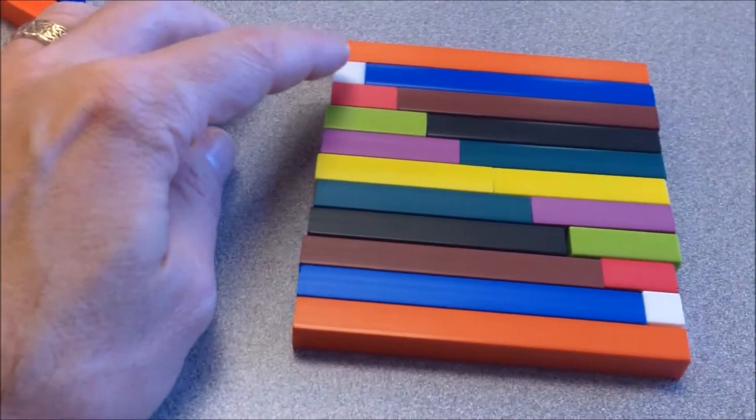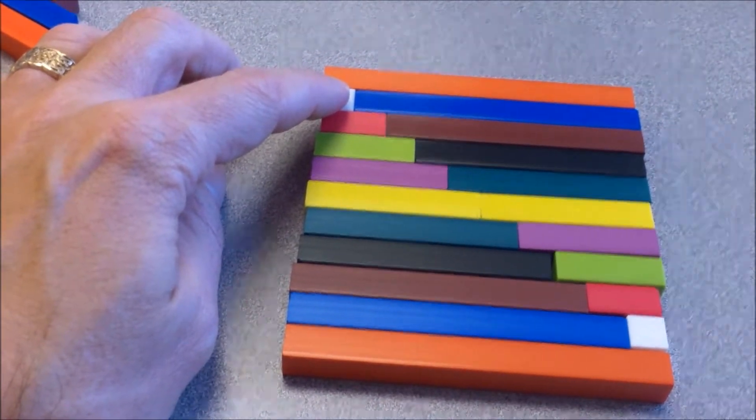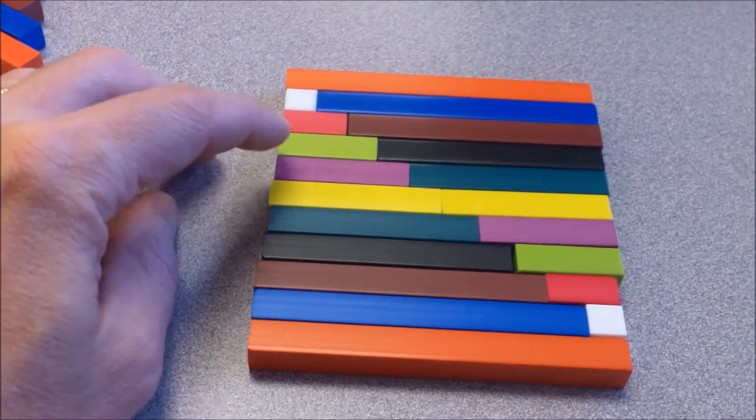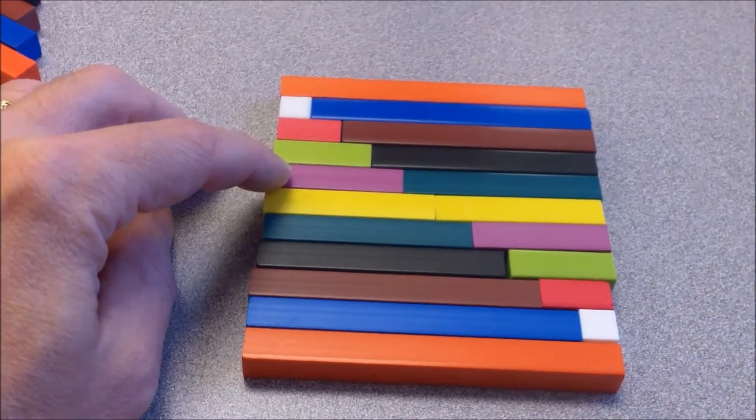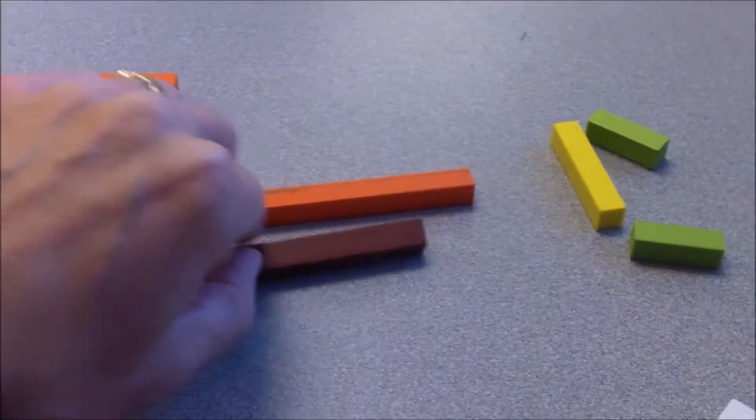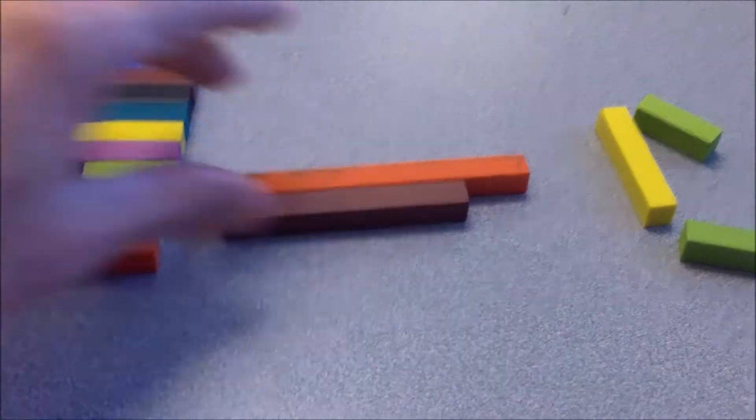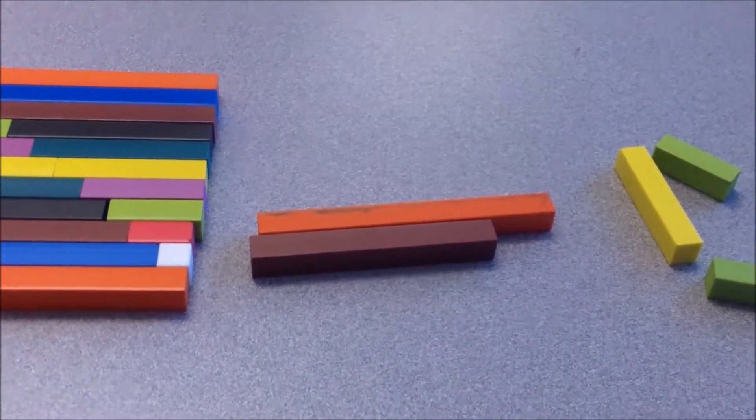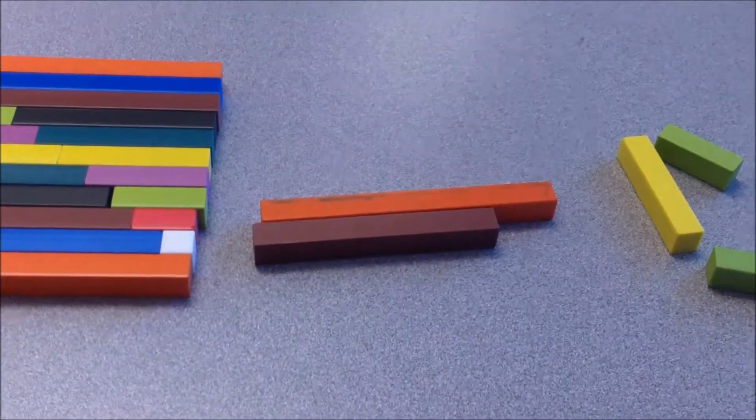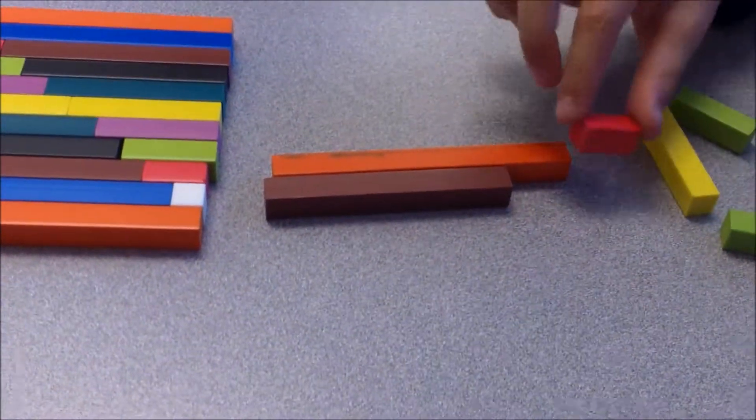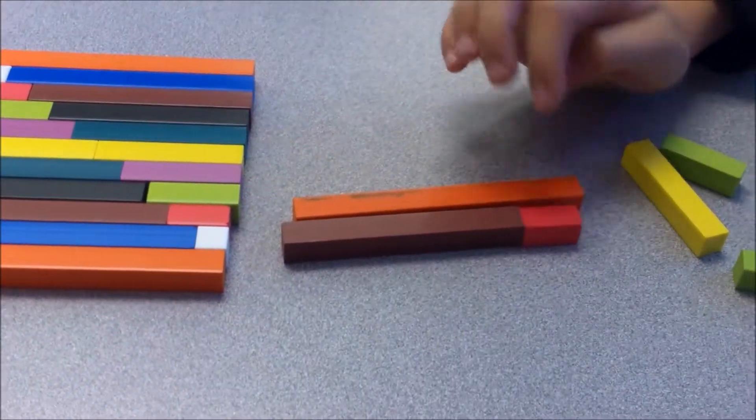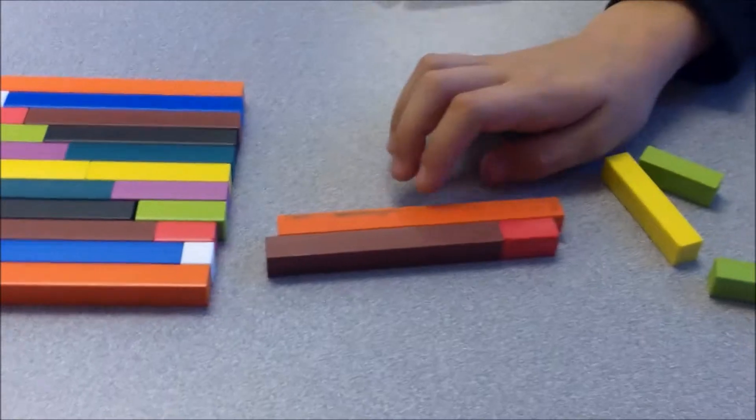Tell these ones which make ten. One plus nine. Two plus eight. Three plus seven. Four plus six. Eight plus what make ten? Eight plus one. Two. Eight plus what make ten? Two. Eight plus two make ten? Yeah. Yeah? Okay.